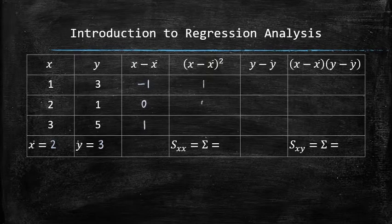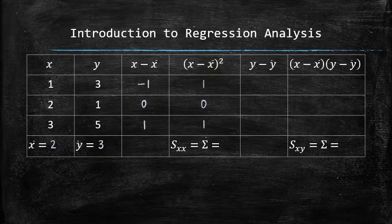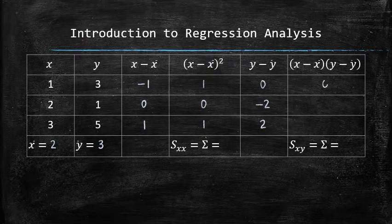We subtract y bar from each value of y to fill out the fifth column. And then multiply each entry by the corresponding entry from the third column to get the sixth column.